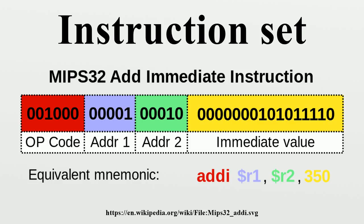A complex instruction set computer has many specialized instructions, some of which may only be rarely used in practical programs. A reduced instruction set computer simplifies the processor by efficiently implementing only the instructions that are frequently used in programs, while the less common operations are implemented as subroutines. Theoretically important types are the minimal instruction set computer and the one instruction set computer, but these are not implemented in commercial processors. Another variation is the very long instruction word, where the processor receives many instructions encoded and retrieved in one instruction word.